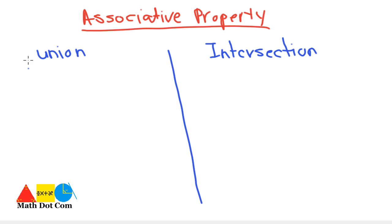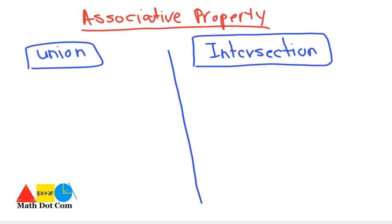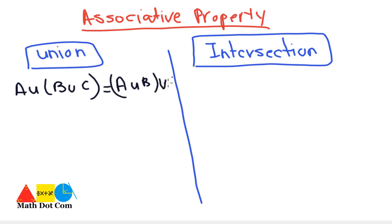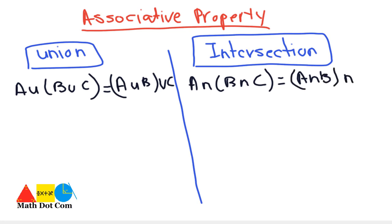The second property is the associative property, applied to both union and intersection. According to the associative property, it doesn't matter how the sets are grouped — the result will not change. For three sets A, B, and C: A union (B union C) equals (A union B) union C. Similarly, A intersection (B intersection C) equals (A intersection B) intersection C.